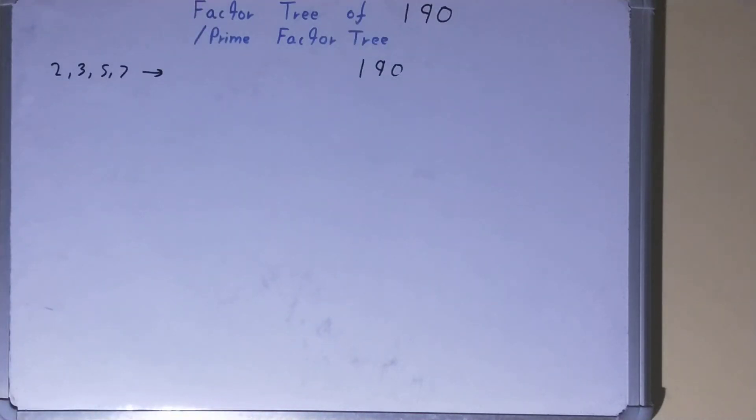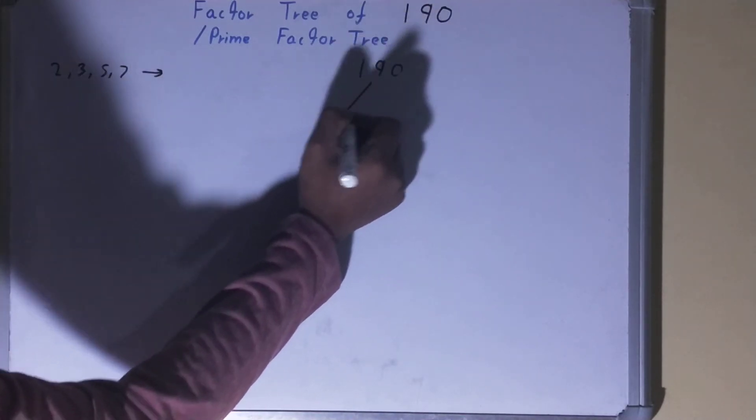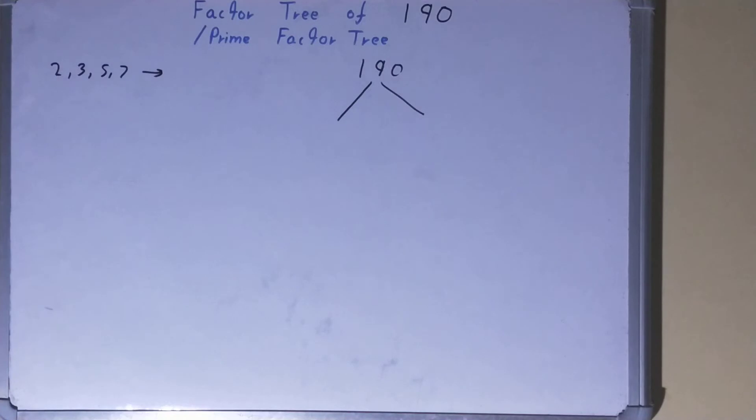You must know that the ending nodes or the terminating nodes of a factor tree is made up of prime numbers like 2, 3, 5, 7, and so on. What we do is we factorize the number into groups of two or sets of two, and the rule is one of the numbers should be a prime number.